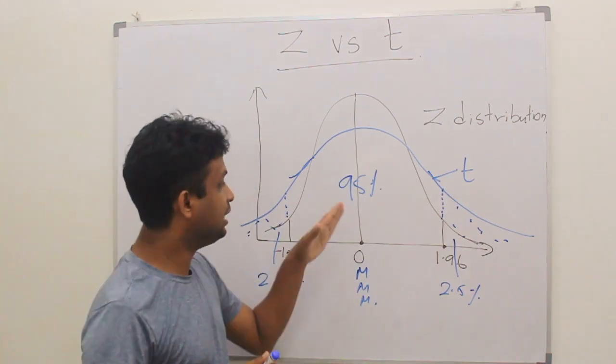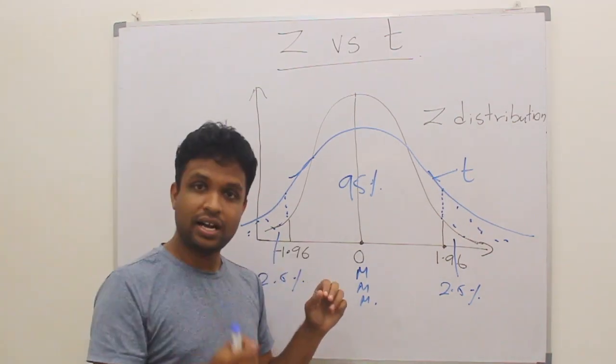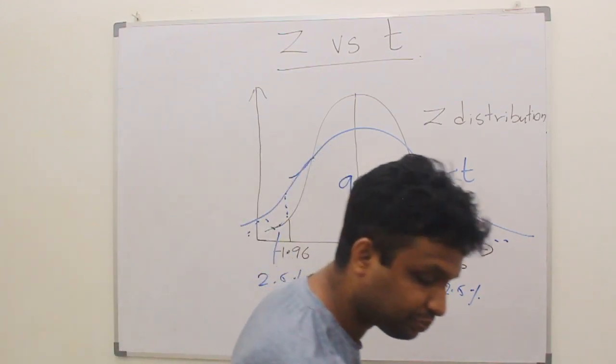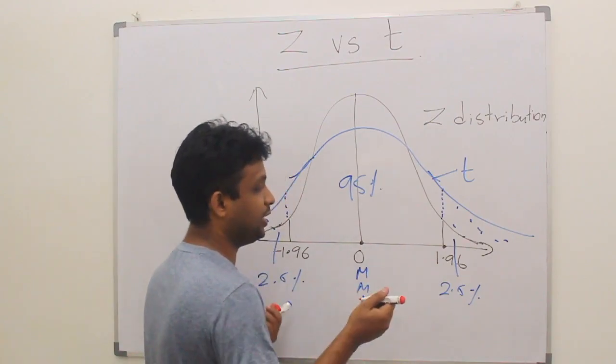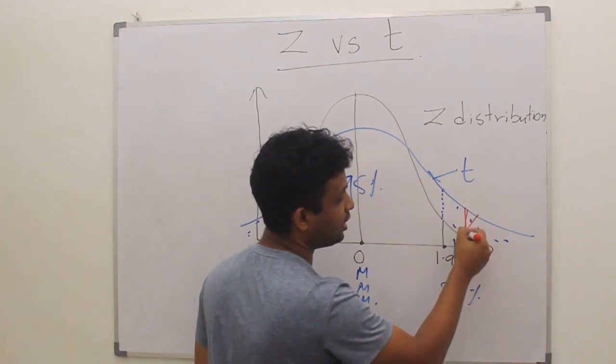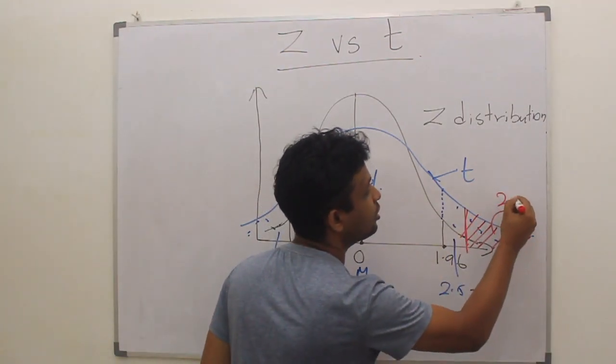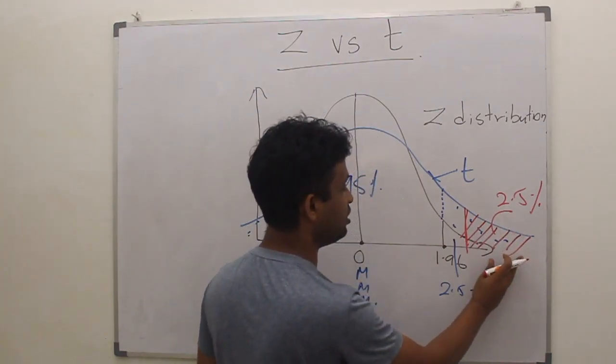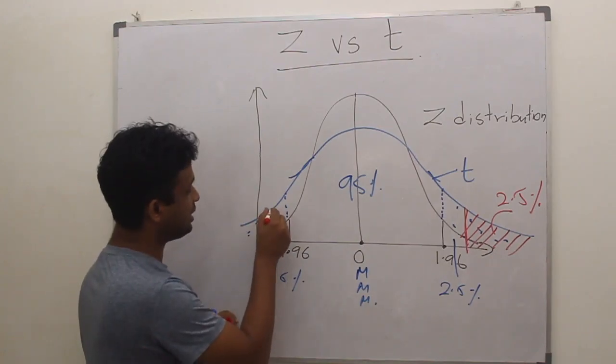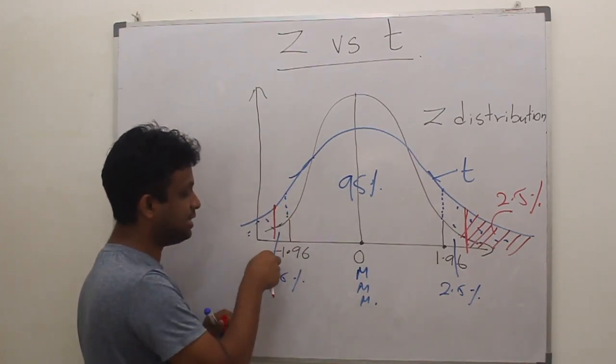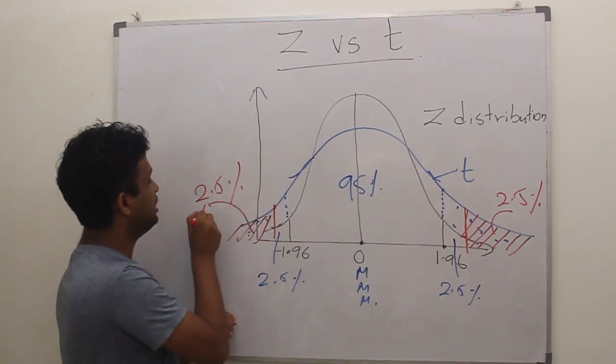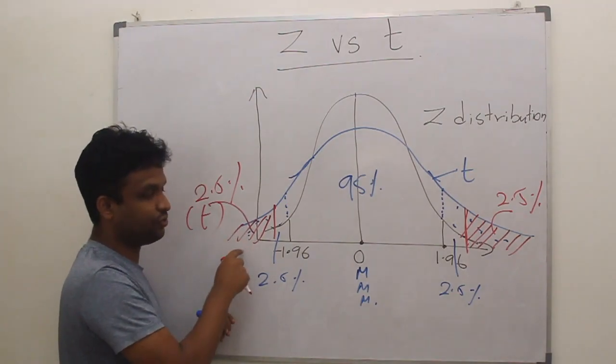So in T-distribution, the 95% margin will be slightly outer than the Z-distribution. It will be somewhere above 1.96. 2.5% of the T-distribution will be in this range, which is higher than 1.96, and for this side, it will be slightly less than minus 1.96.